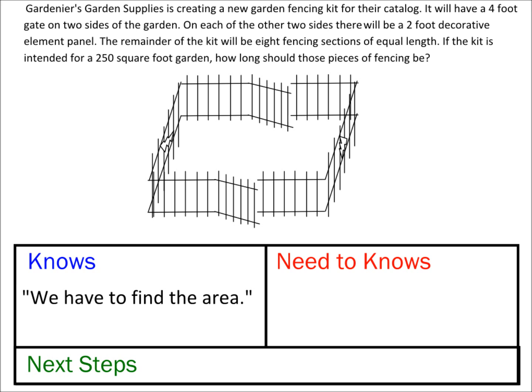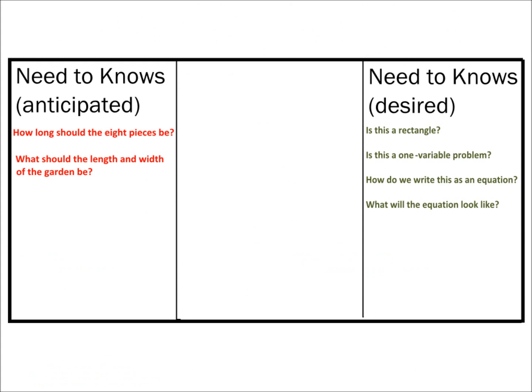That's great and all, but sometimes it results in knows and need-to-knows that aren't very useful. Know, we have to find the area. Need-to-know, how to find the area. Next steps, ask teacher how to find the area. It'd be great if, as a facilitator of this process, you had an idea of where you wanted the students to go and where the students will probably be at.